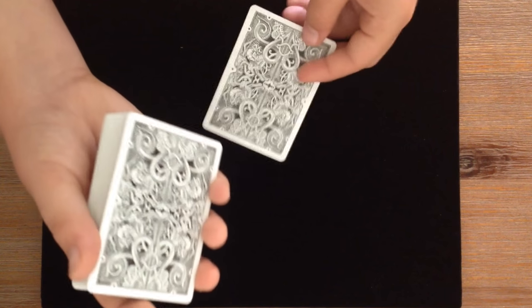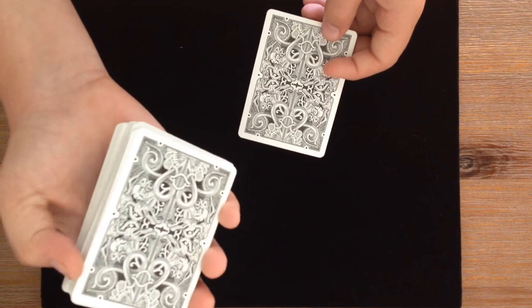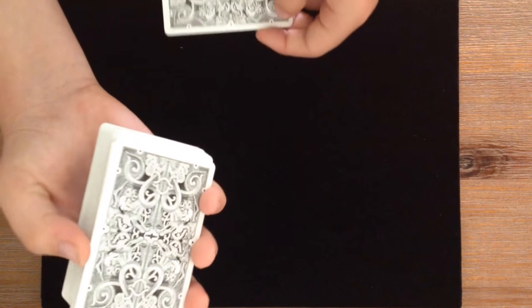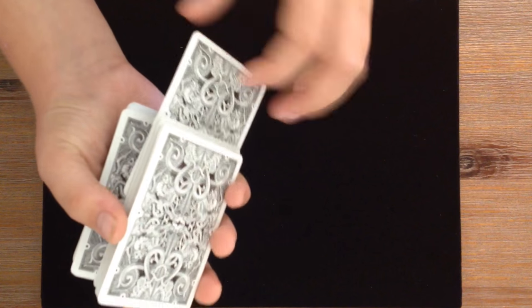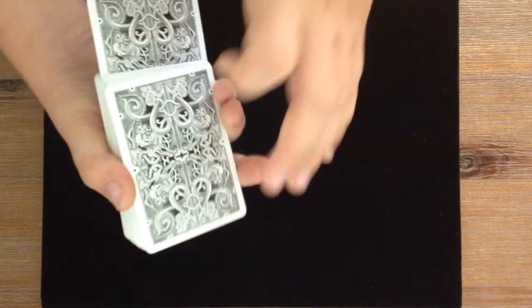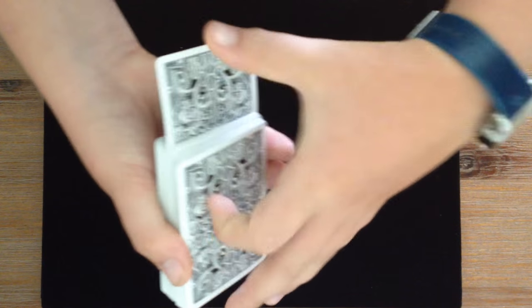Take the nine of clubs and what you do is you can either break off half of the deck or you can just place it in. I prefer to break it off because it looks a bit cooler. Place it in around about center and you say, look, that looks around about center. And as you do that, you push this down.